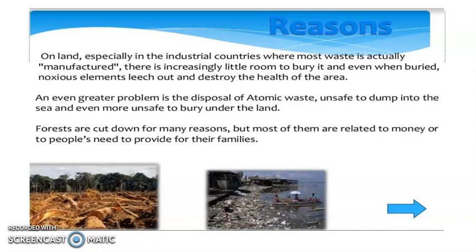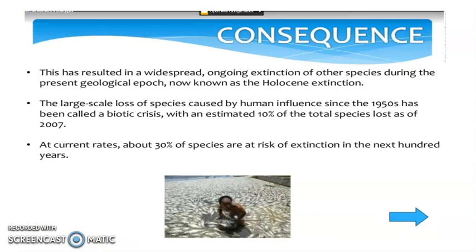Forests are cut down, but most of them are related to money or to people's need to provide for their families. This has resulted in a widespread ongoing extinction of other species during the present geological epoch, now known as the Holocene extinction. The large-scale loss of species caused by human influence since the 1950s has been called a biotic crisis, with an estimated 10% of the total species lost as of 2007.